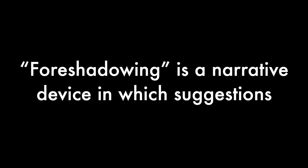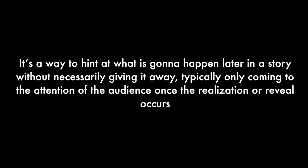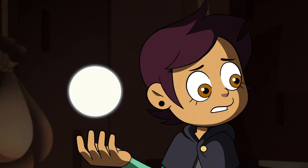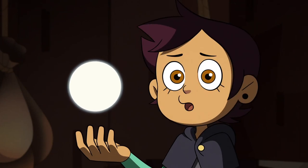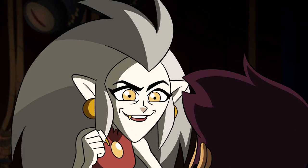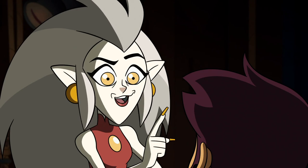Foreshadowing is a narrative device in which suggestions or warnings about events to come are dropped or planted. It's a way to hint at what is going to happen later in a story without necessarily giving it away, typically only coming to the attention of the audience once a realization or reveal occurs. It's a rather simple concept, but to do it right can be complicated. There are multiple ways to do it at multiple degrees.